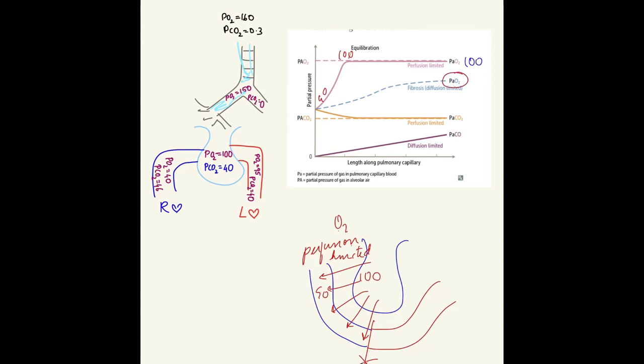Similarly for carbon dioxide, the partial pressure which is initially 46 reaches equilibrium at 40, and there's no more diffusion. The only way to increase it is by bringing in more blood flow. This is perfusion limited, which normally applies to oxygen and carbon dioxide.